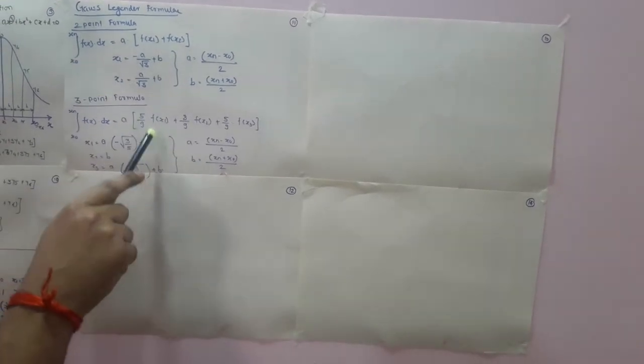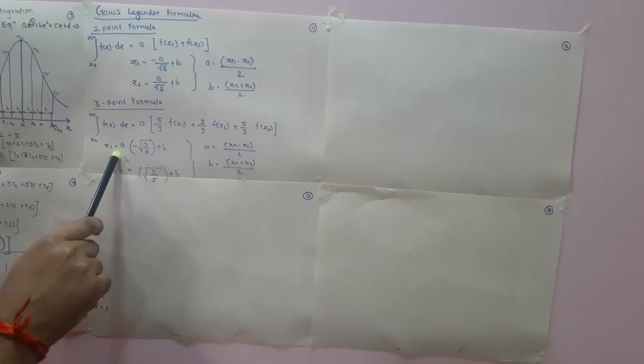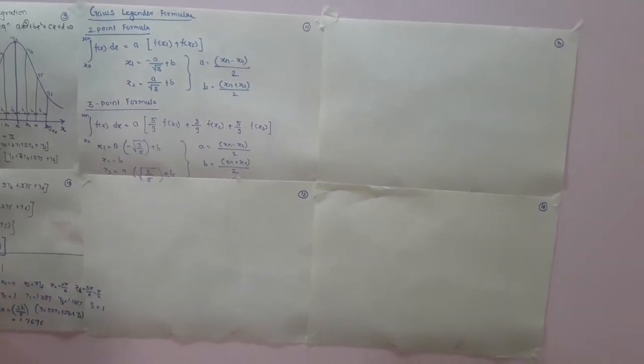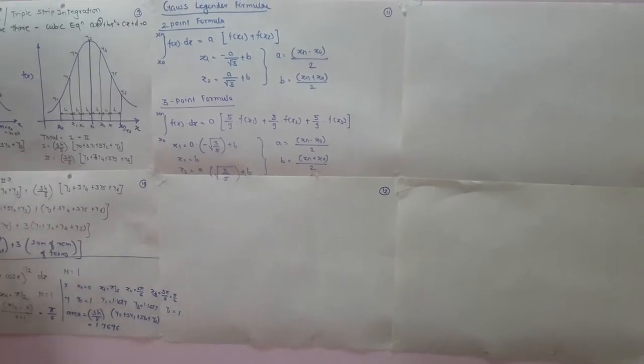In the three-point formula, the integration of f(x) dx from x0 to xn is evaluated as a into 5/9 times f(x1) plus 8/9 times f(x2) plus 5/9 times f(x3), where x1 equals a times minus root(3/5) plus b, x2 equals b, and x3 equals a times root(3/5) plus b. Here a equals (xn minus x0) divided by 2 and b equals (xn plus x0) divided by 2.